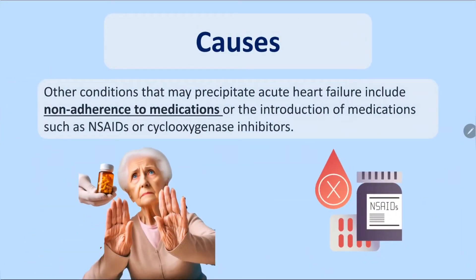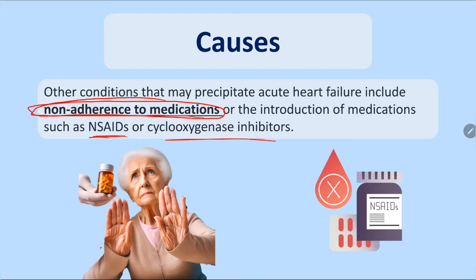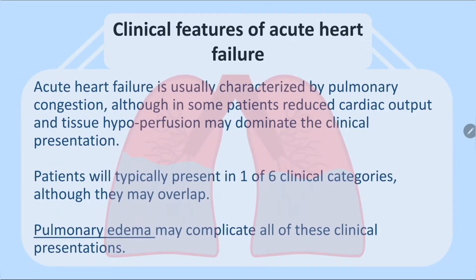The most common problem in patients with pre-existing heart failure is non-adherence to medications. Many of these patients are elderly with mobility difficulties; they don't want to use the toilet frequently due to diuretics, so they stop taking them — and after two to three days they get sudden shortness of breath and pulmonary edema. Sometimes they take their medications but introduce new drugs like NSAIDs or steroids, causing fluid retention and acute-on-chronic heart failure.